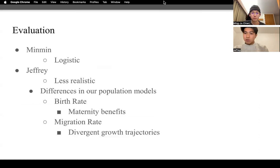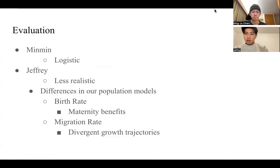Our population models for Taoyuan and Taipei reveal significant differences. Varied birth rates, influenced by maternity benefits, and distinct migration rates contribute to divergent growth trajectories.